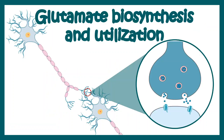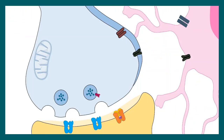Glutamate biosynthesis and utilization is a complex procedure. Let's try to understand this by looking at the synapse. Here is a glutamatergic synapse. You can see the presynaptic neuron terminal here and the postsynaptic dendritic terminal here. And in pink, you can see a glia nearby.